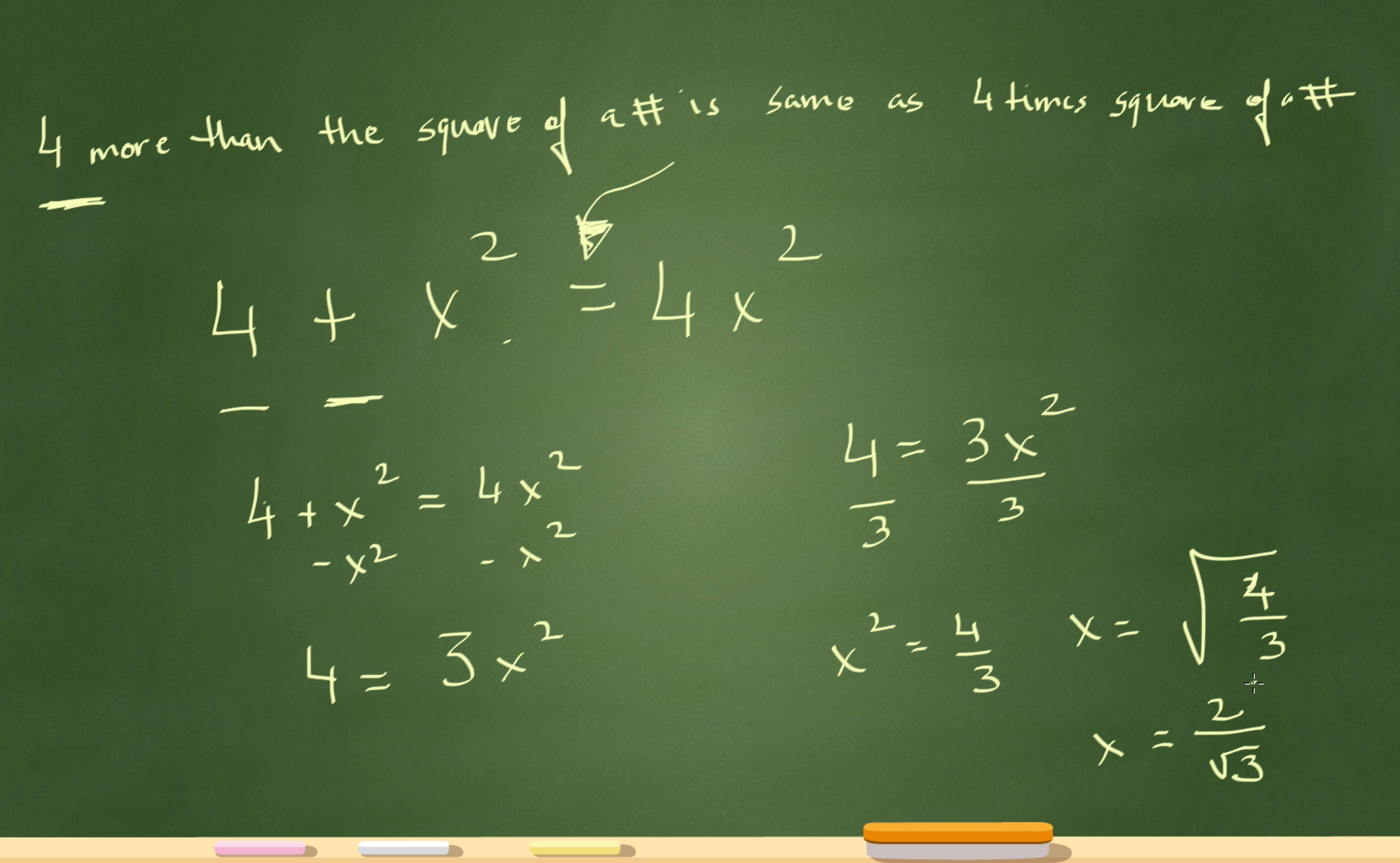In this case, I don't have to do anything else because I have an answer choice that looks exactly like this. So I'll leave it just like that: 2 root 3.